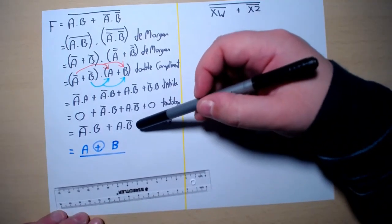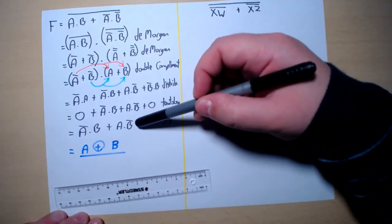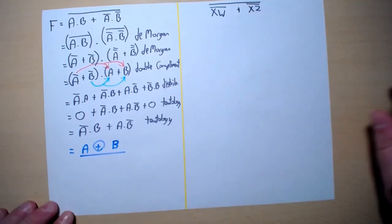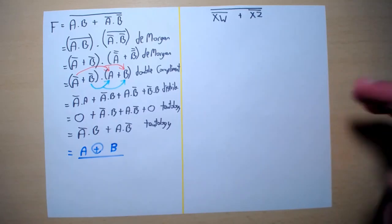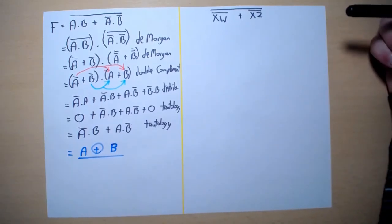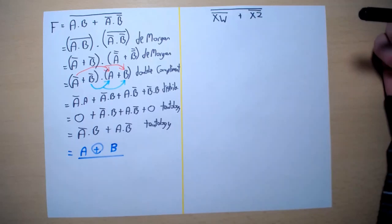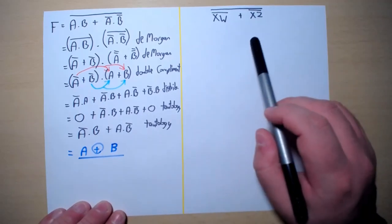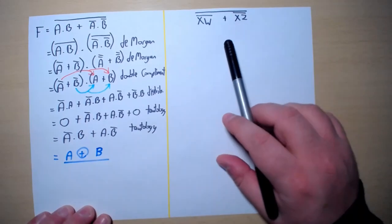May I remind you that if you leave the answer like this, it is still correct, provided that you are not asked in the exam or in the particular question that you are working to simplify it and make it possible to use only one single gate.